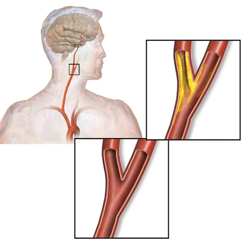The common carotid artery is the large artery whose pulse can be felt on both sides of the neck under the jaw. On the right side it starts from the brachiocephalic artery, a branch of the aorta, and on the left side the artery comes directly off the aortic arch. At the throat it forks into the internal carotid artery and the external carotid artery. The internal carotid artery supplies the brain, and the external carotid artery supplies the face.